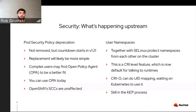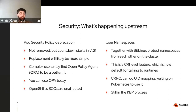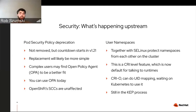Let's jump into security — what's happening upstream. Two main things. First, with Kubernetes version 1.21, pod security policies are deprecated. This doesn't mean they're going to be removed yet — I think that's going to happen in 1.25. The replacement will probably be a little more simple. Complex users might like some features of the Open Policy Agent, which you can run today on OpenShift just fine. OpenShift SCCs — security context constraints — are unaffected by this. This is kind of what pod security policies were modeled after, so we've had your back before and we'll have your back in the future.